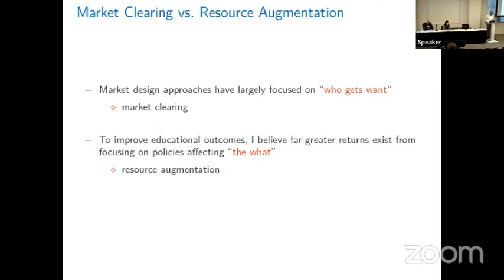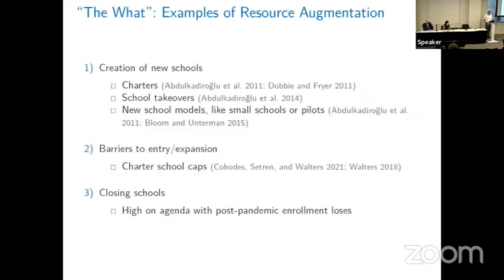The computer science literature sometimes calls this resource augmentation — evaluating the performance of an algorithm in terms of what would happen if we have more resources. The argument I want to advance is that even though many of us have spent a lot of time focused on market clearing policies, I think to improve educational outcomes there are far greater returns to focusing on policies centered on resource augmentation. Examples include the creation of new schools — high expectations charter schools, school takeovers like what happened in New Orleans following Hurricane Katrina, small schools reforms in New York City, or pilot schools in Boston.